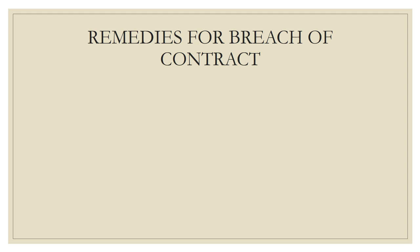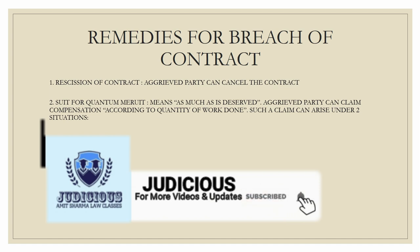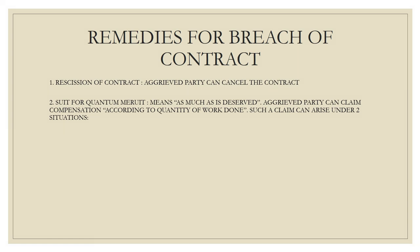Remedies for breach of contract include: first, rescission of contract — the aggrieved party can altogether cancel the contract. Second is suit for quantum meruit, which means payment according to the quantity of work done. If you have done some work before the contract was breached, you can claim payment for that work.